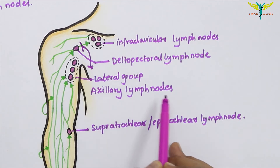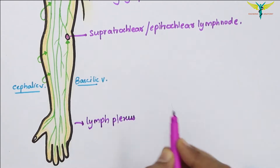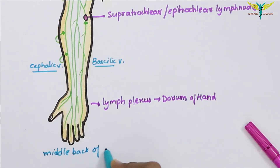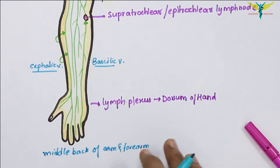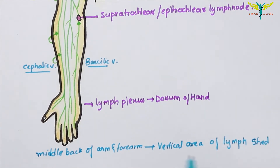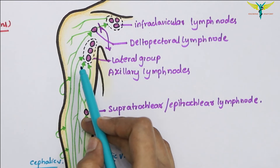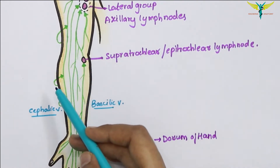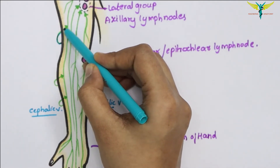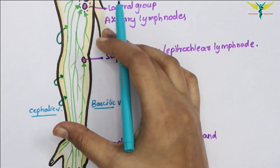Almost all superficial lymph vessels of the upper limb drain into the lateral group — the axillary lymph nodes. The lymph from the palm is drained into the lymph plexus on the dorsum of the hand. On the middle back of the arm and forearm, there is a vertical area of watershed formed by lymph vessels from the back of the arm and forearm that curve around the medial and lateral borders to reach the front of the limb.